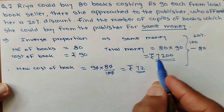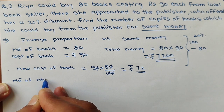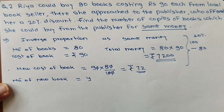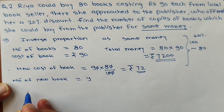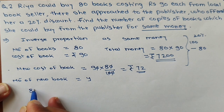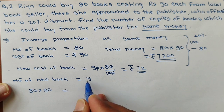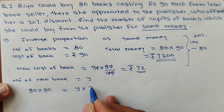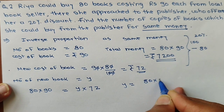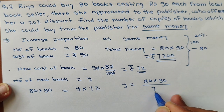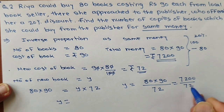Since the money is fixed, if we consider the new number of books as y, then y into 72 must equal 7200. Using the inverse proportion formula: 80 into 90 equals y into 72, so y equals 7200 divided by 72, which gives y equal to 100.